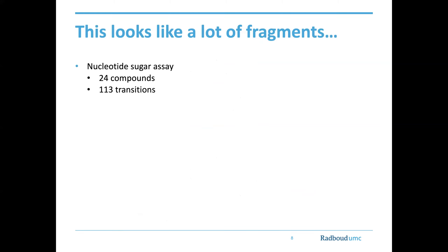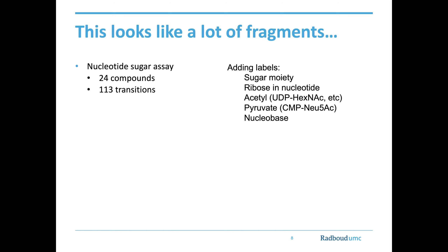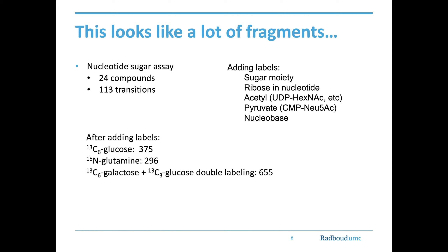The problem is that this is quite a lot of fragments to deal with. For an assay assessing endogenous nucleotide sugars relevant in humans, we have 24 compounds with 113 transitions in total. Normally these methods are developed more or less manually — a technician basically types it into the instrument software, checks it, and adjusts. This is quite error-prone, and if you are adding labels on different parts of the molecule, you need to be very careful when adjusting precursor and fragment masses.